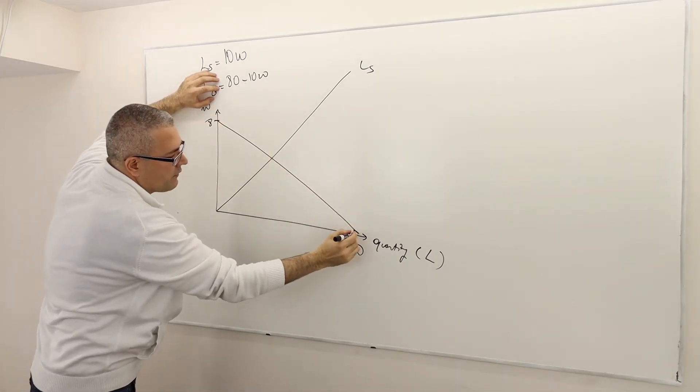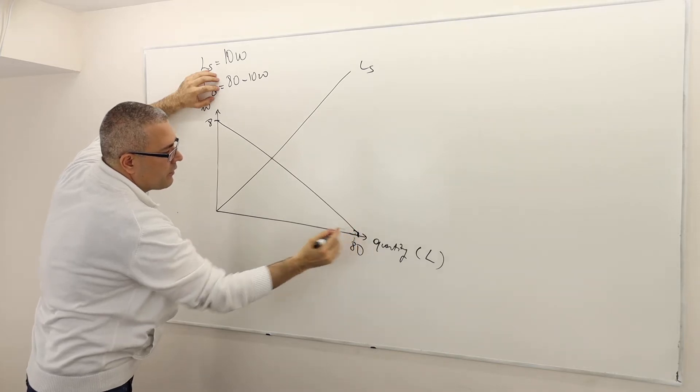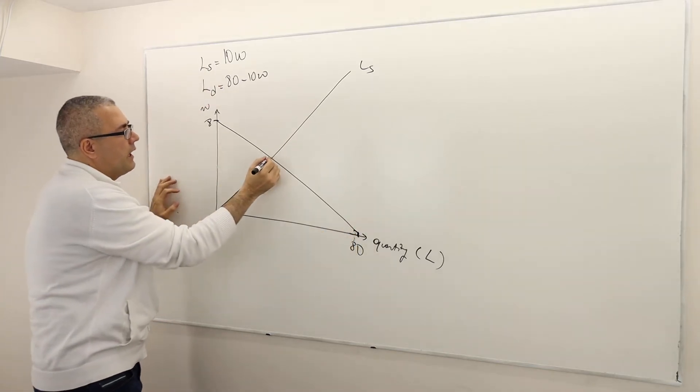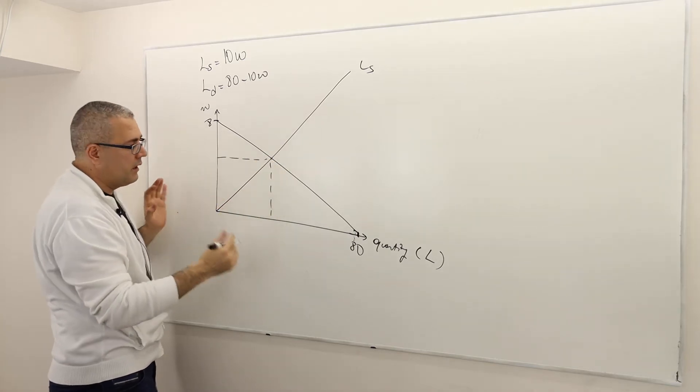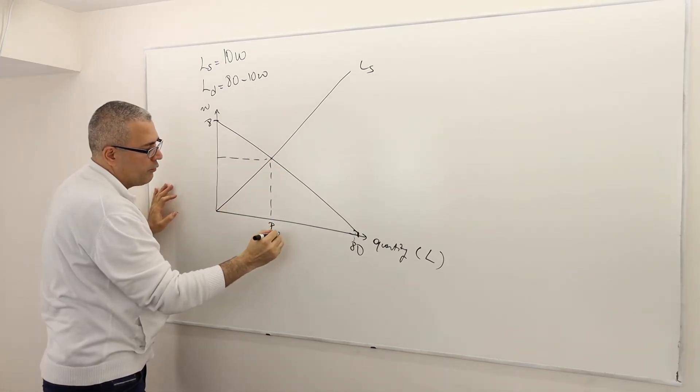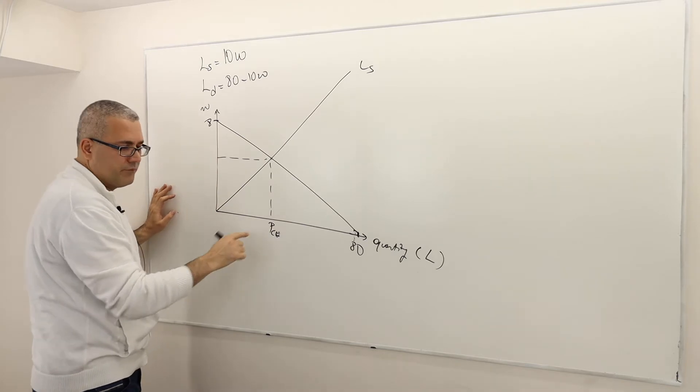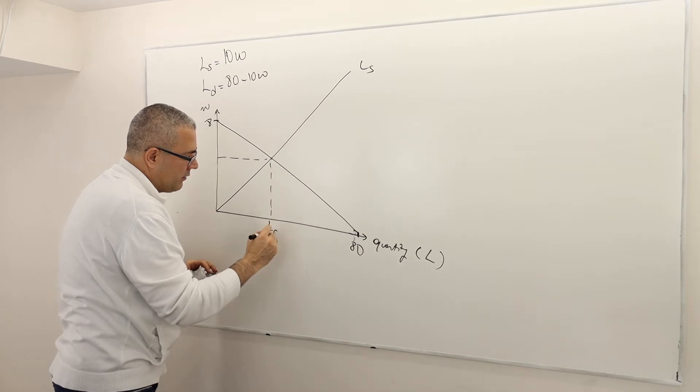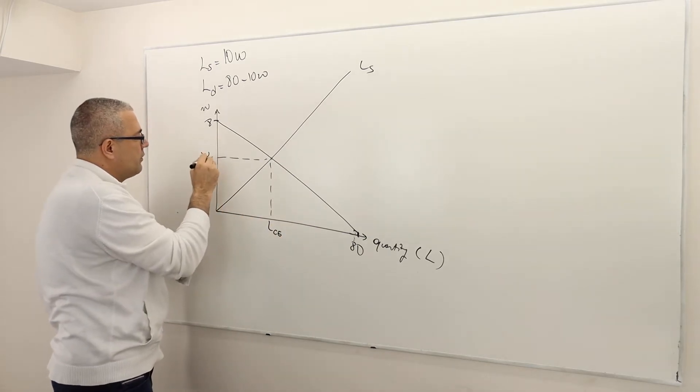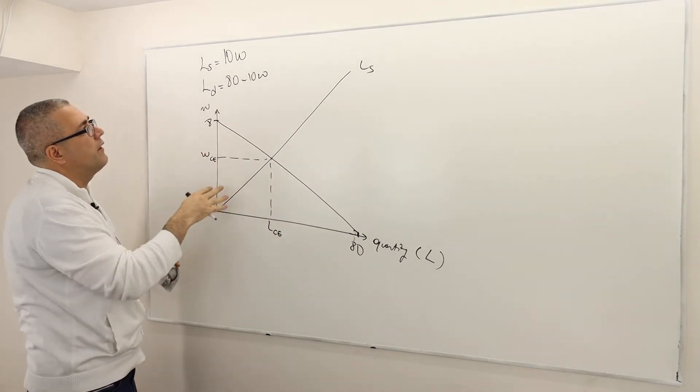So the demand curve is going to look something like this. So let's say this is 80. I'm sorry. So that means the supply and the demand will intersect at some point, which is the perfectly competitive equilibrium price. I'm sorry, this is not, what is P? This is the L competitive equilibrium. This is W competitive equilibrium.